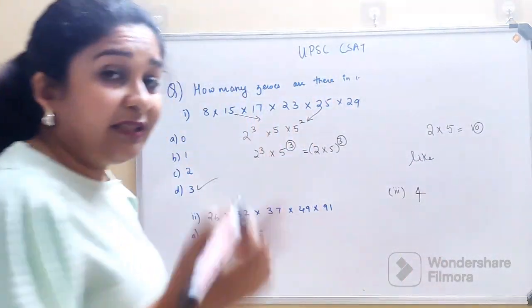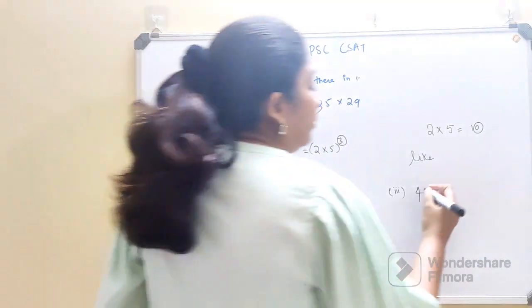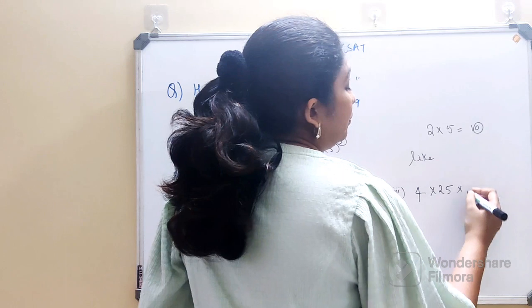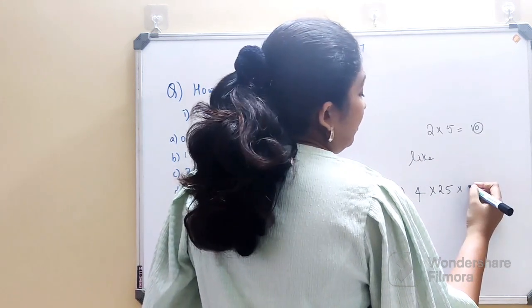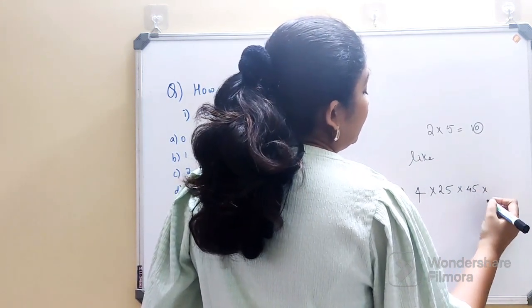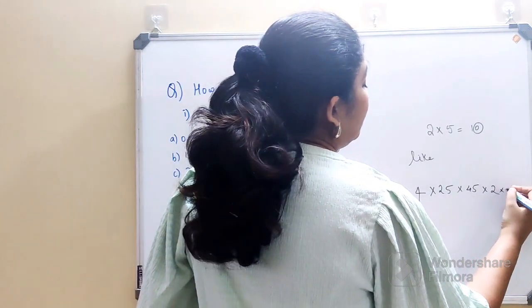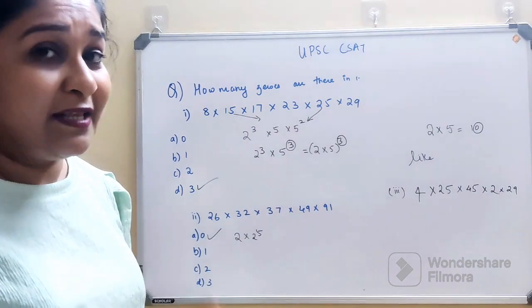So now, you tell me what will be the answer for 4×25×45×2×29. Do let me know your answers in the comment section. But wait, wait—if let's say I had changed this question...